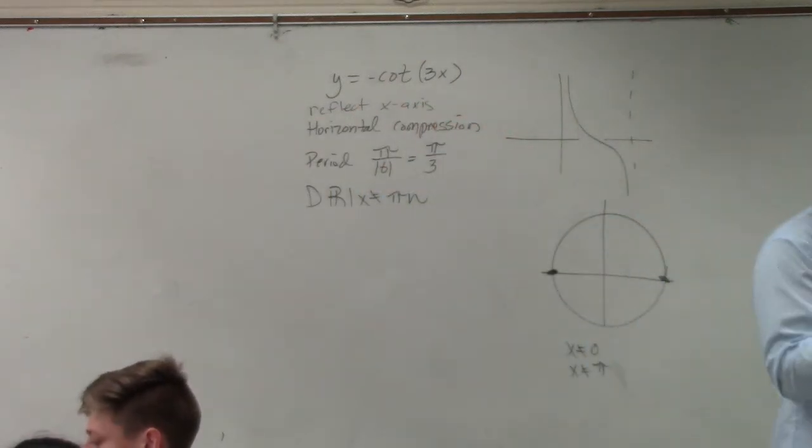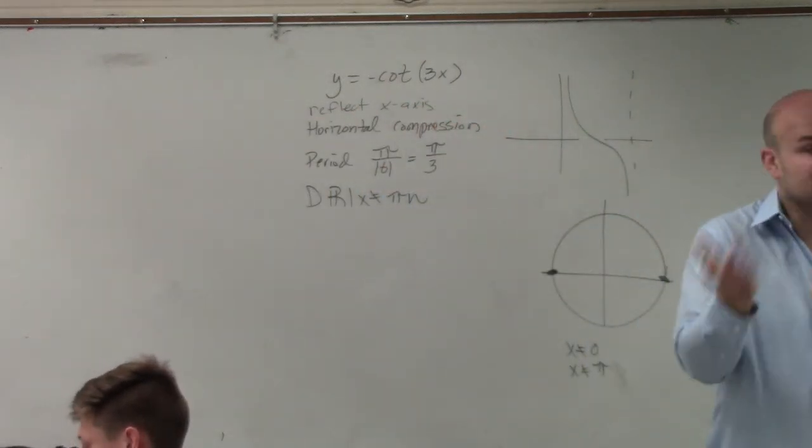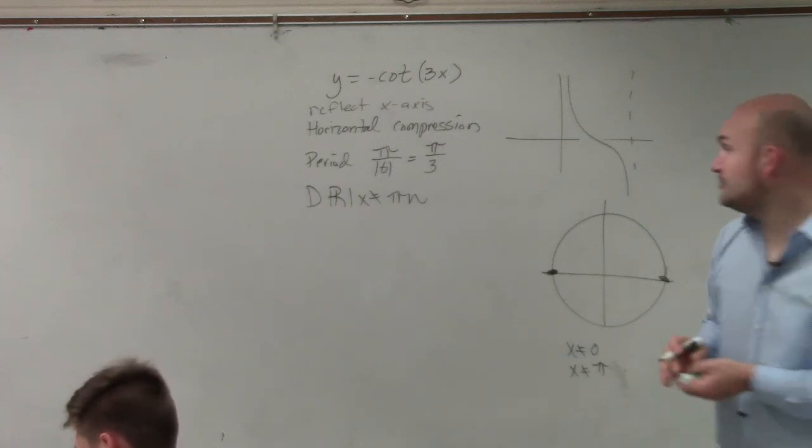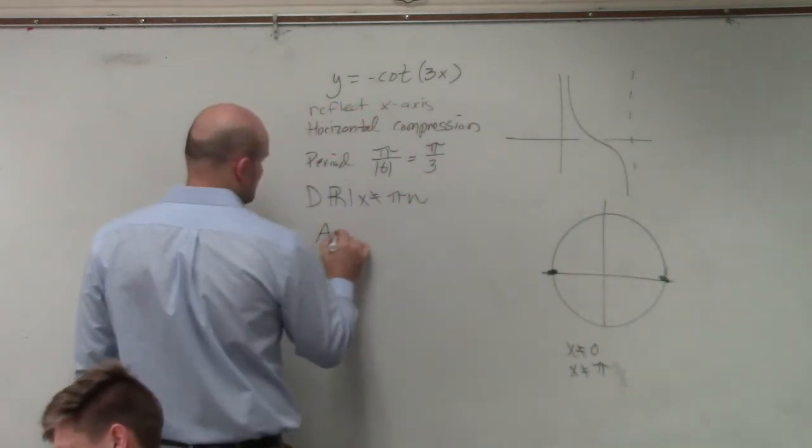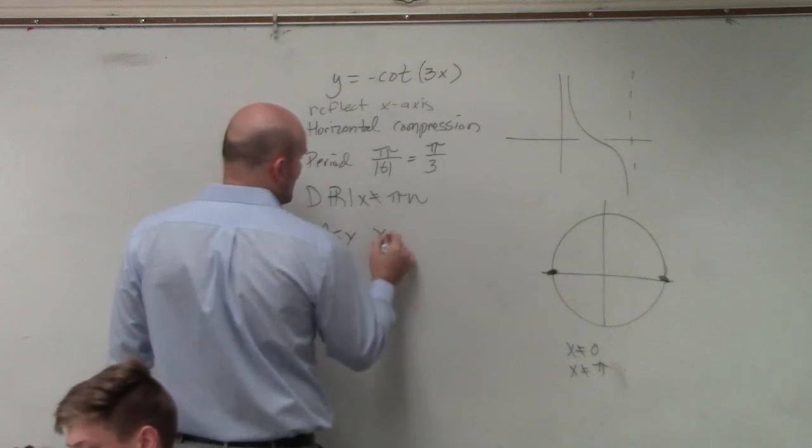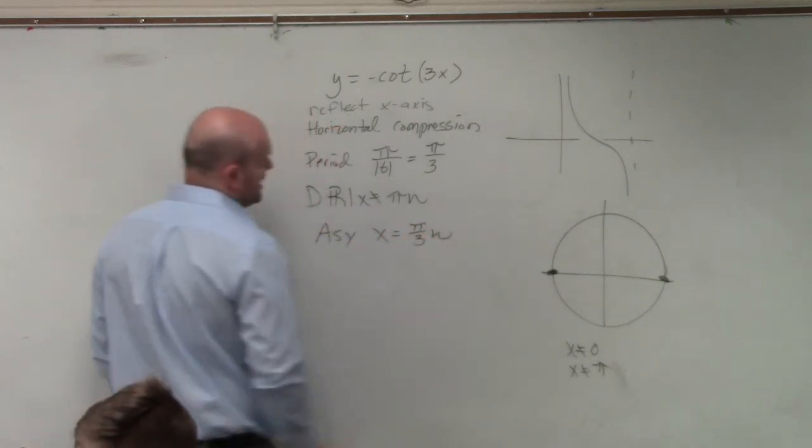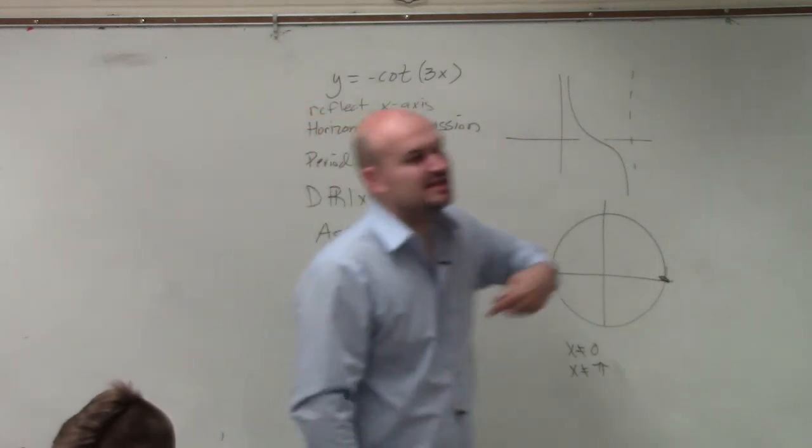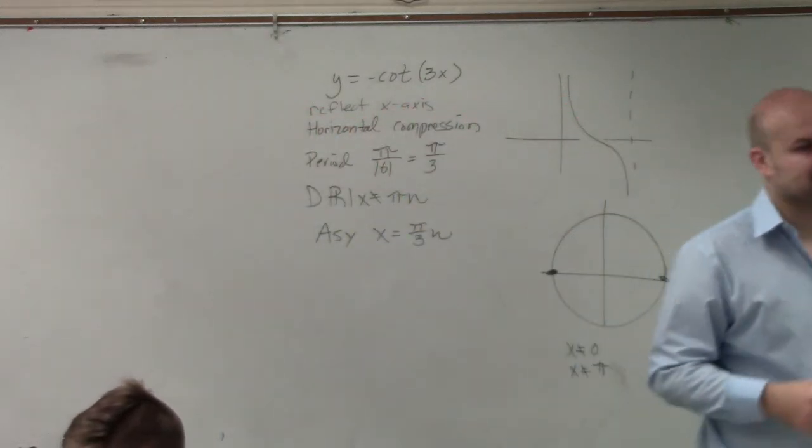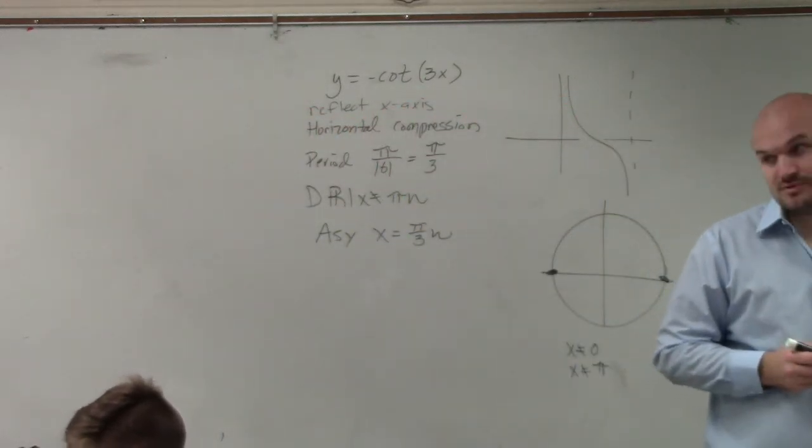But if I'm changing my period to dividing that by 3, my new asymptotes are going to occur at x equals π over 3n. Because now everything is getting divided by 3. So that is where your asymptotes are now going to occur.